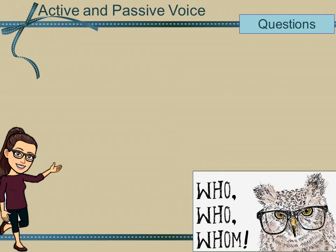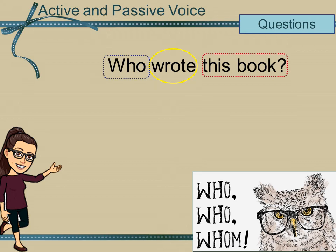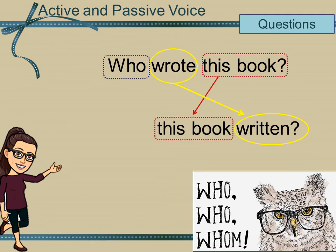Where questions are concerned, the old conundrum of when to use WHO and when to use WHOM will be settled. Let's look at the question: Who wrote this book? WHO is my subject, WROTE the verb, and this book being my object. Instead of switching the subject and the object like we did previously, we are now going to switch around the verb and the object, so the verb moves to the back as WRITTEN and the object will precede the verb — meaning it will stand in front of the verb. Then WHO, our subject, will turn into BY WHOM. The passive voice of this question will then read: By whom was this book written?